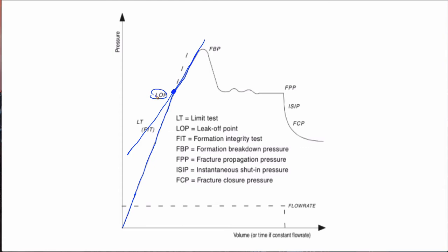The leak-off point is a pretty good approximation for S3, but it's not always good — especially if you're pumping fluid through a cased well and through perforations, because there's a lot of tortuosity and extra resistance to fluid flow through the perforations. Also, if you're pumping a really high viscosity fluid, that could add to it. So the leak-off point is most accurate in an uncased well if you're pumping water or thin oil.